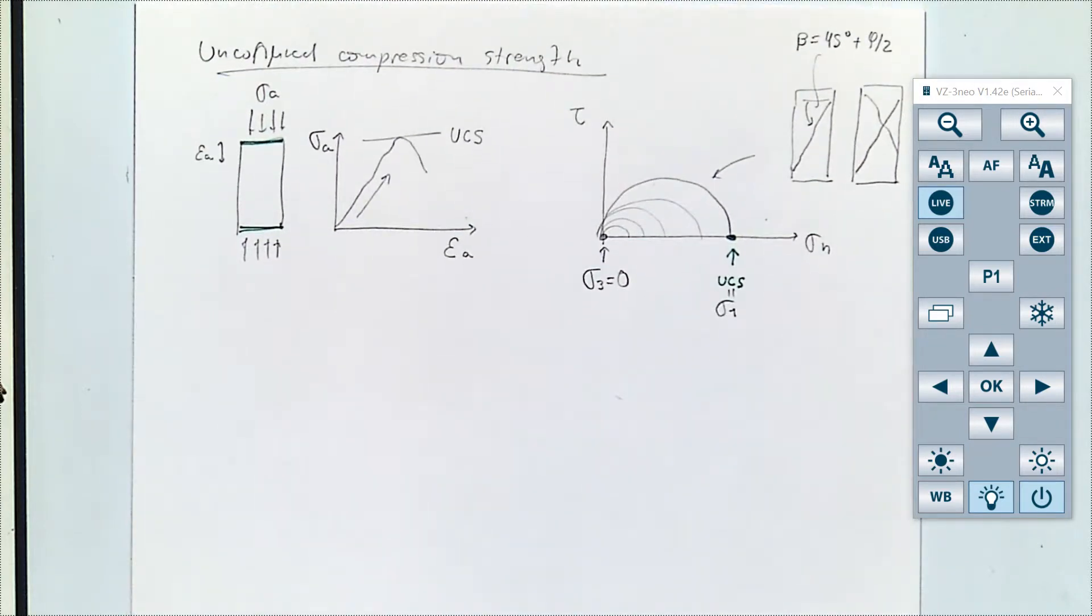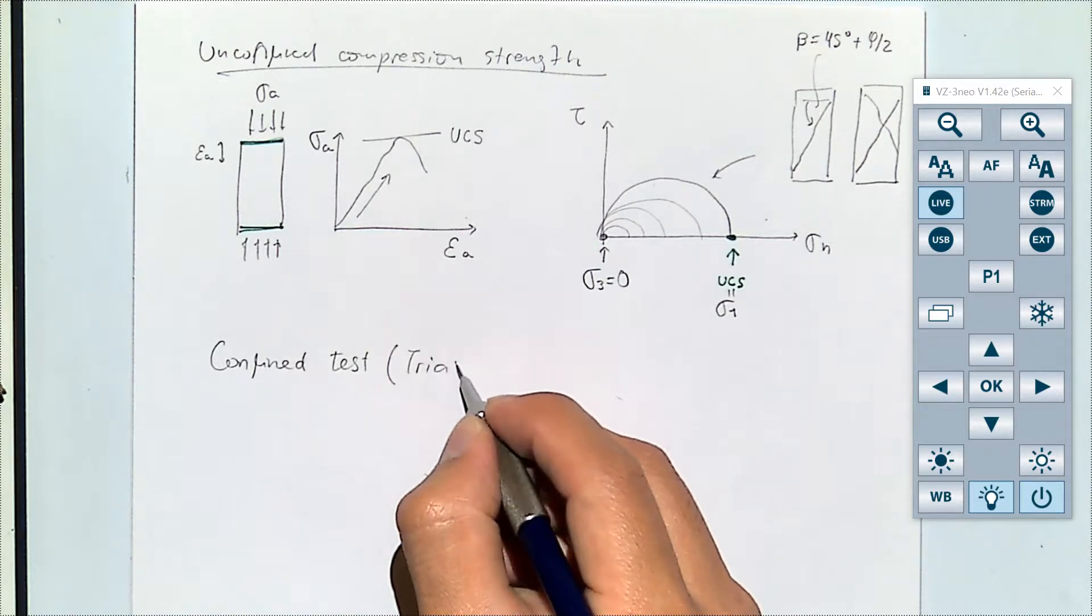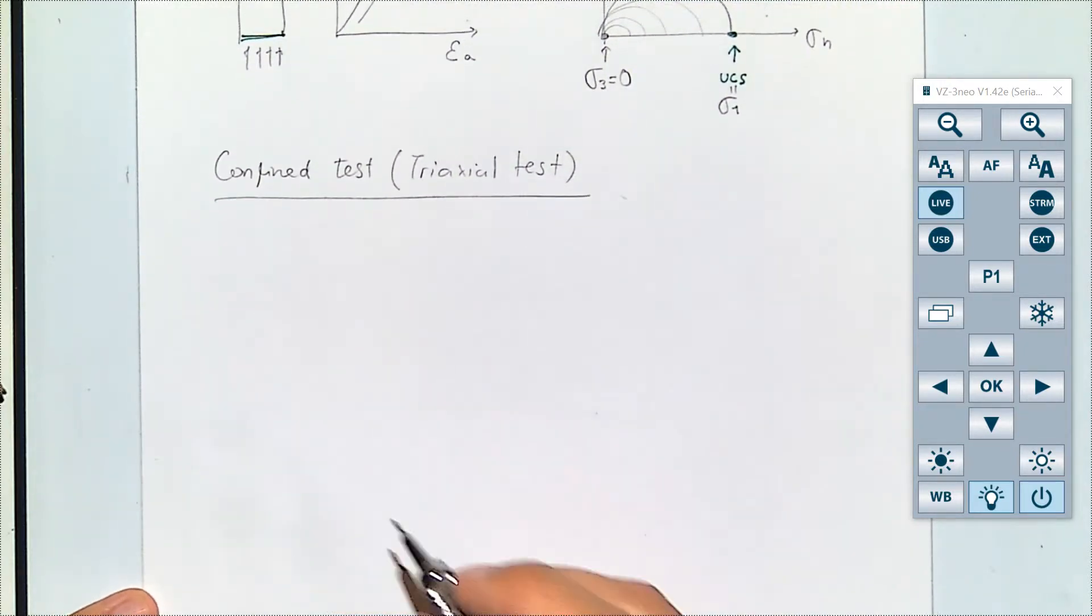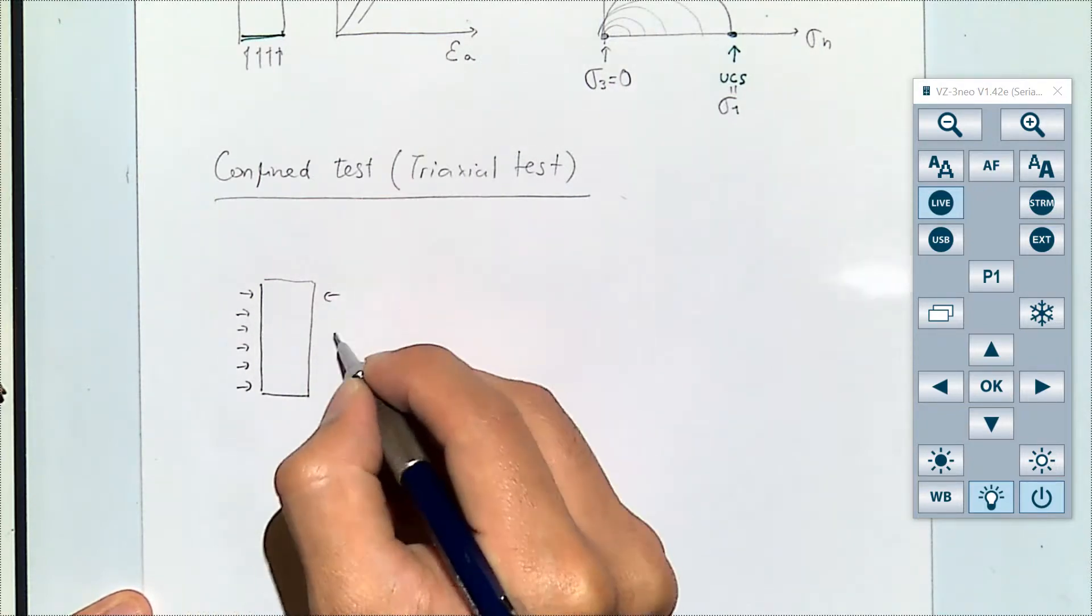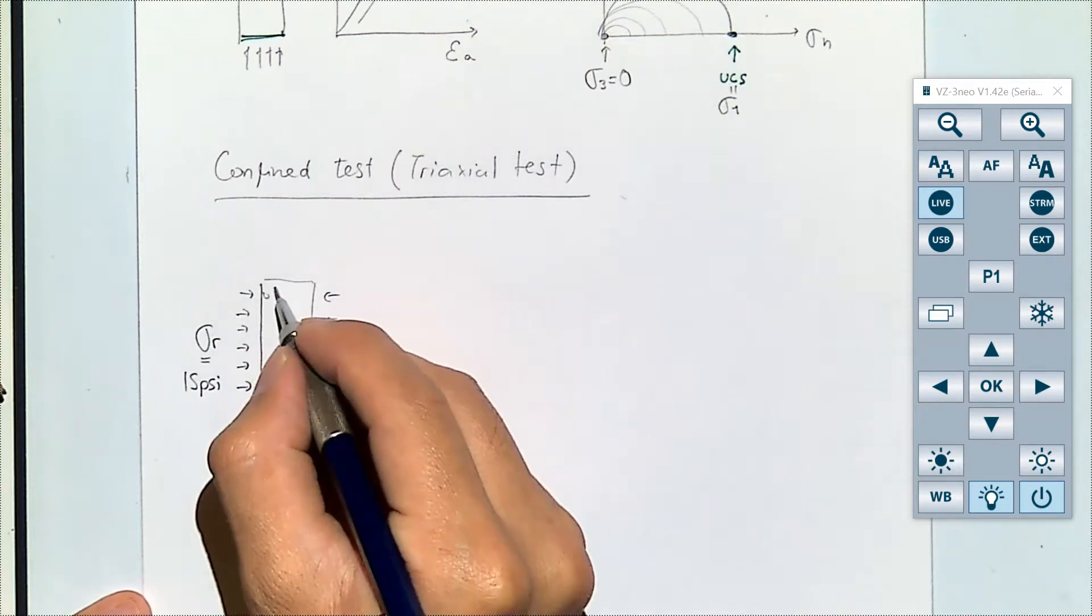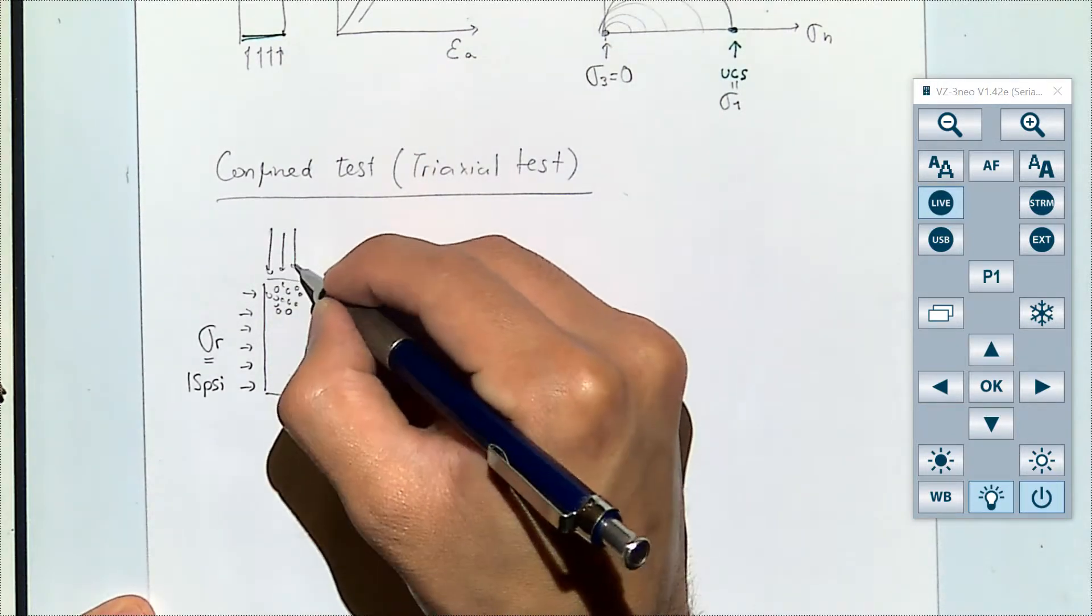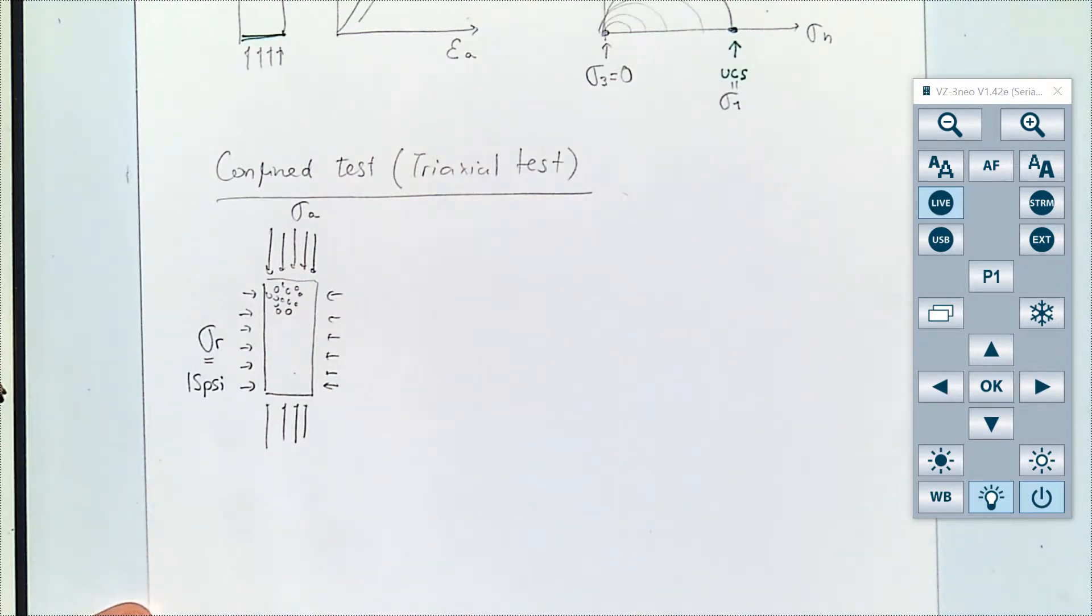What we just did for that package of coffee was a confined test or sometimes also called a triaxial test. And it's called triaxial test because in addition to the axial stress we have a radial stress. In the experiment that we just did our radial stress was equal to 15 psi which is atmospheric pressure because the pore pressure inside the granular material was 0 because it was under vacuum and then we added an additional axial stress.